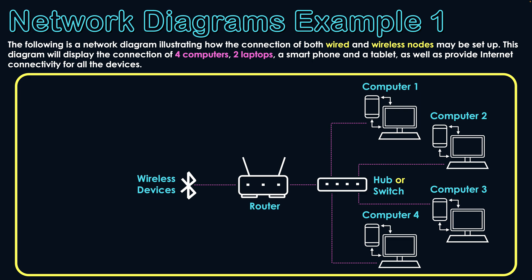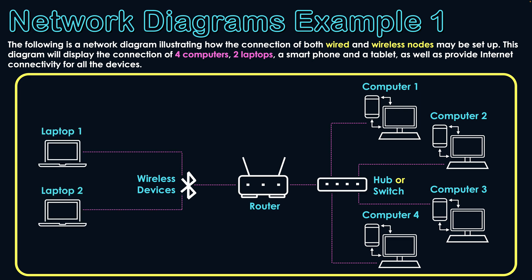So it's most likely going to be a wireless connection for the laptops. I'll use the wireless device symbol, and they will connect directly to the router by connecting to the network ID and using the password to join the home network. That is how both laptops will connect wirelessly to the router.